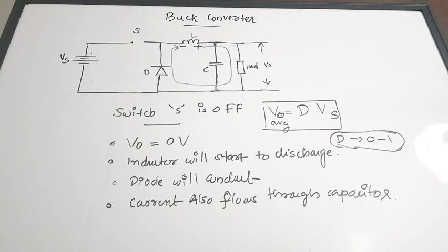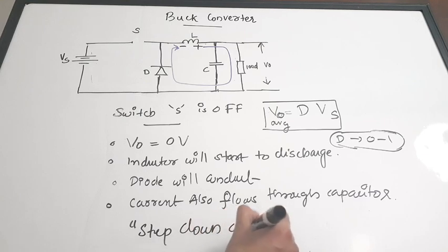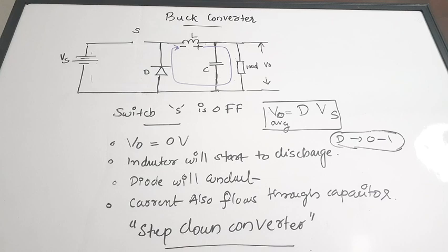The average output voltage is clearly always lesser than the supply voltage, confirming this is a step-down converter. The output average voltage is less than the supply voltage — so the converter is reducing the supply voltage and stepping it down. It produces an average output lesser than the supply, which is why it is a step-down converter.